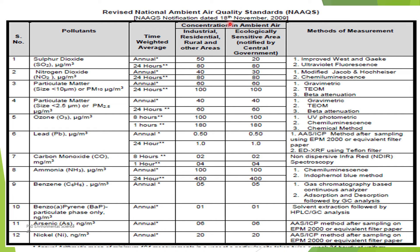This image depicts the National Ambient Air Quality Standards as per the notification dated November 18, 2009. It lists various pollutants along with their acceptable concentration levels in ambient air for different areas, and the methods used for their measurement. The pollutants include sulfur dioxide, nitrogen dioxide, particulate matter, and so on. The time-weighted average indicates the duration over which pollutant concentrations are averaged — annual, 24-hour, 8-hour, or 1-hour.